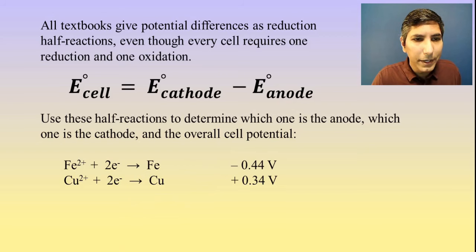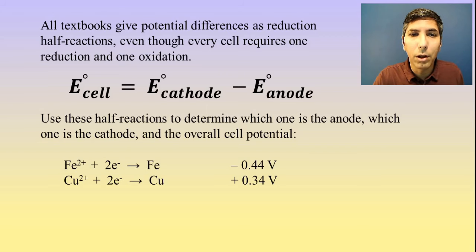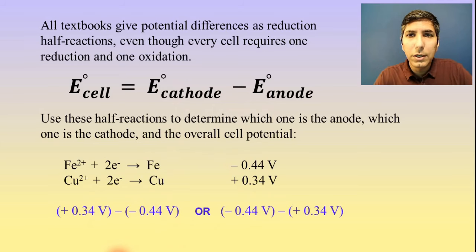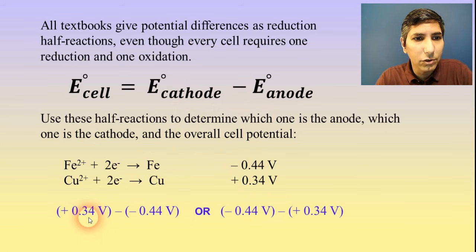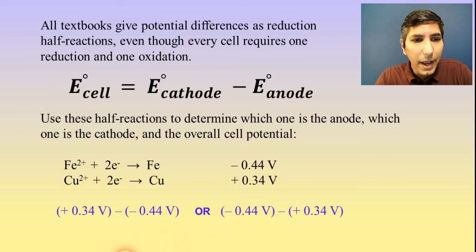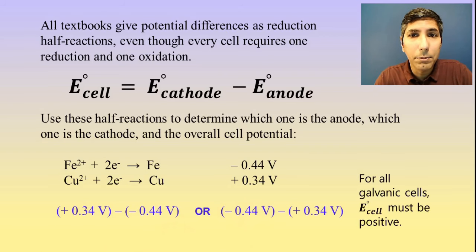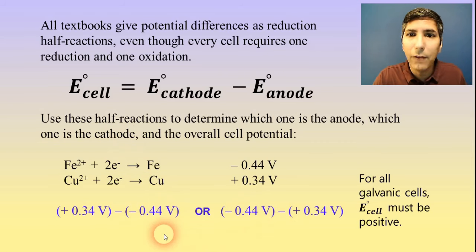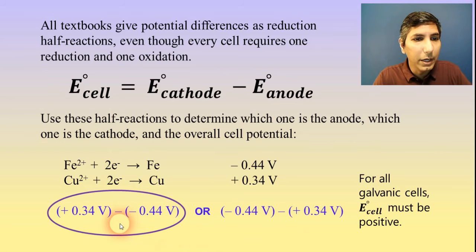Let's take a look at this example. It says: use these half-reactions to determine which one is the anode, which one is the cathode, and the overall cell potential. We're going to plug these numbers into the equation in two different ways — with 0.34 in the first position, and then with negative 0.44 in the first position — and we're looking for the answer that gives us a positive number. In every galvanic cell, the E-cell has to be positive. It's the first one that gives us a positive voltage for that galvanic cell.